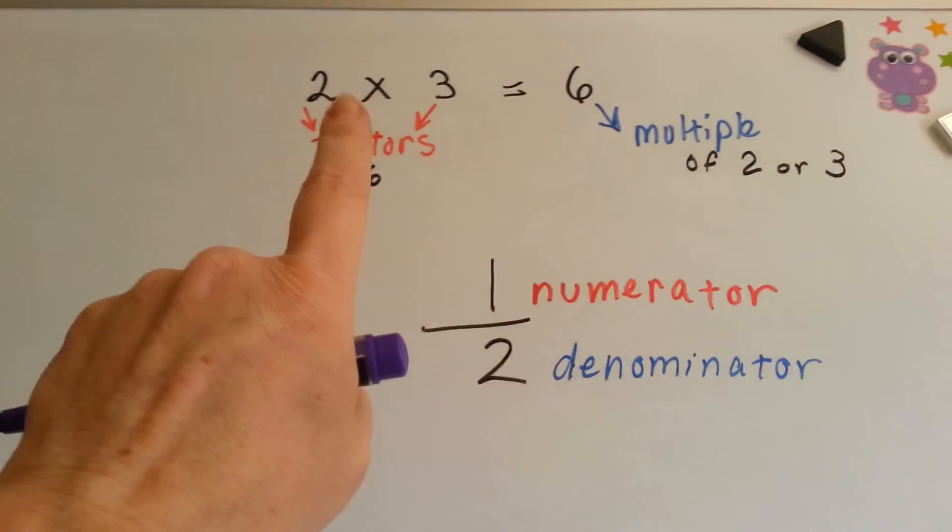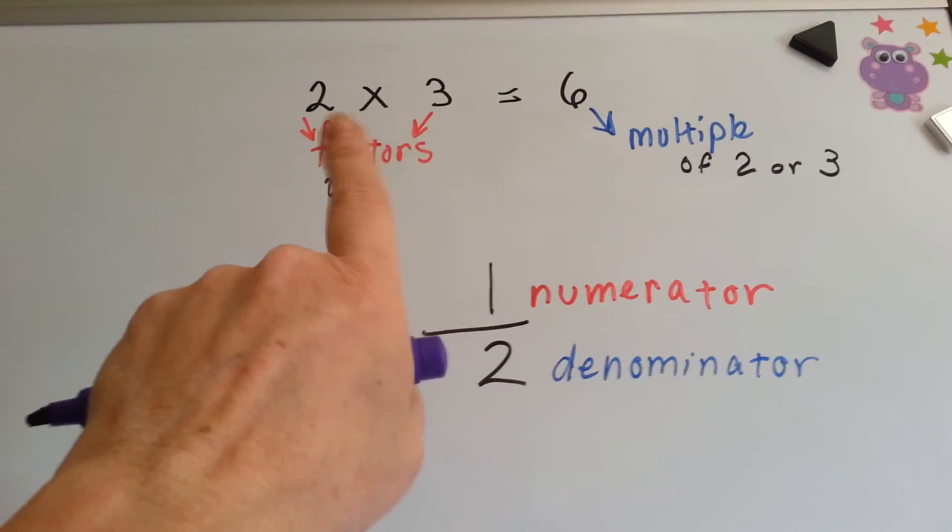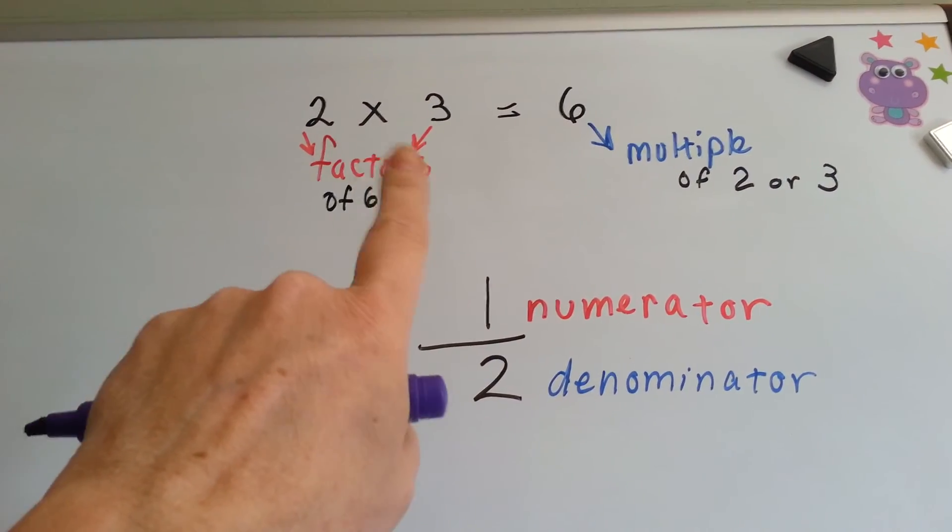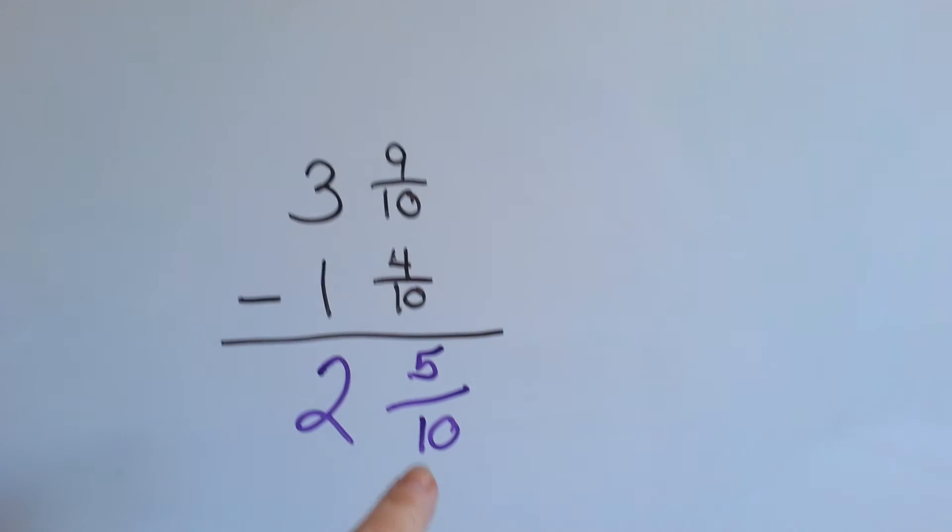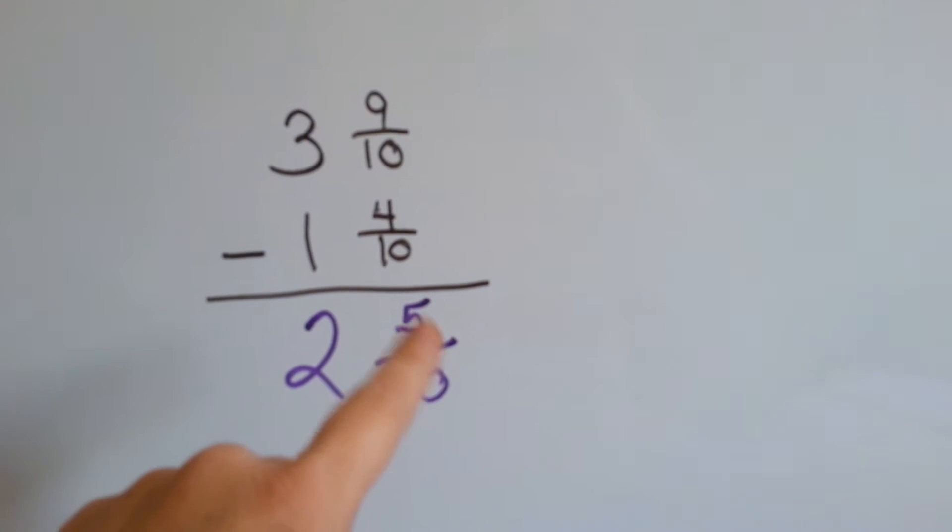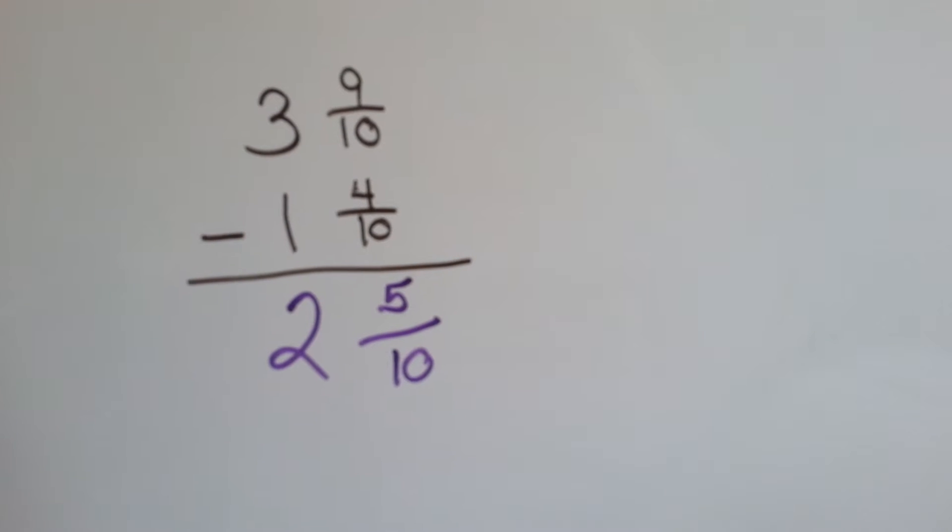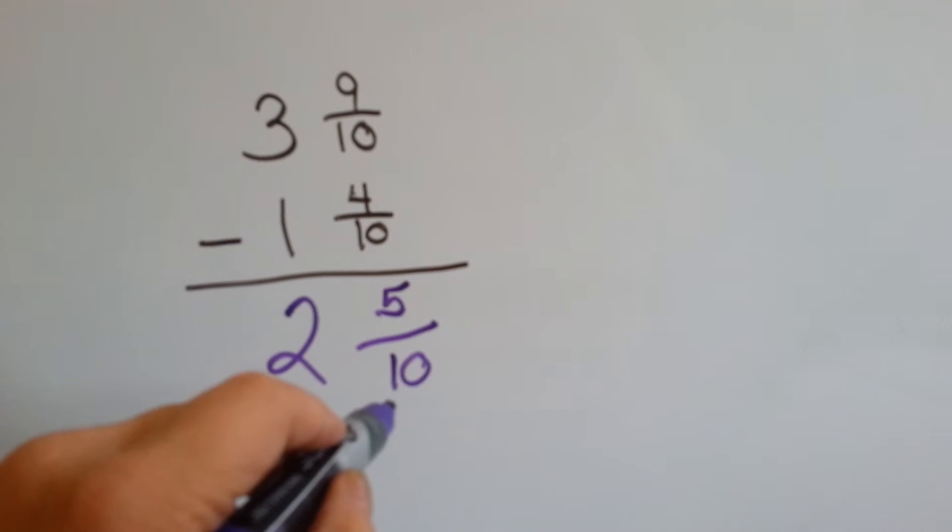Remember, a factor is a number that makes up a multiplication equation. These are factors. So what number times what number can we use to fit into the 10? 5 can fit into the 10, can't it?